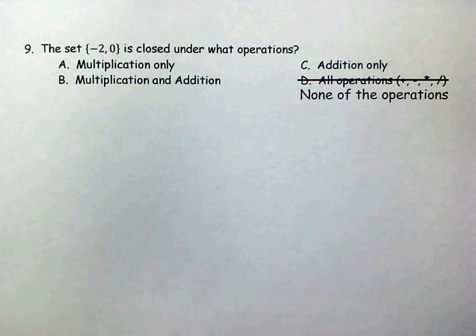Number 9, the set negative 2, 0 is closed under what operations? So this is a review from Algebra 1. I hope that you talked about closed and open in Algebra 1 last year.